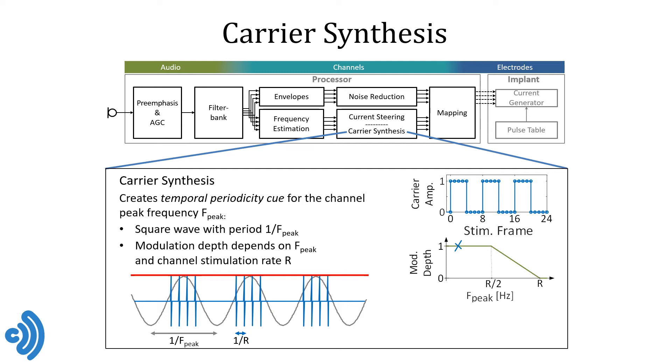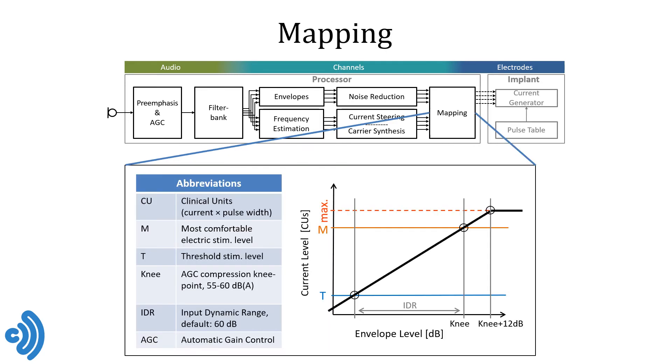Unfortunately, while this kind of temporal coding is a very interesting subject to study with real CI recipients, the vocoder CI simulation used in this hackathon is actually not very sensitive to manipulations of the temporal fine structure of the electric pulse trains. So I want you to understand what's going on in this step because you will come across it in the source code, but I would not recommend you spend a week improving and fine-tuning this particular module, only to find that it actually has very little effect on the acoustic CI simulation.